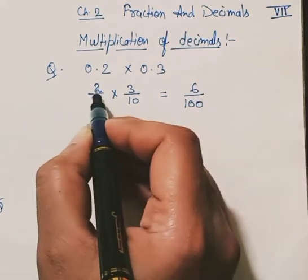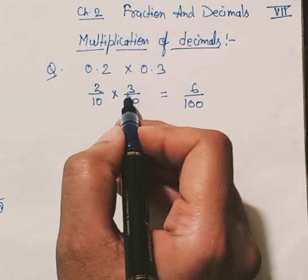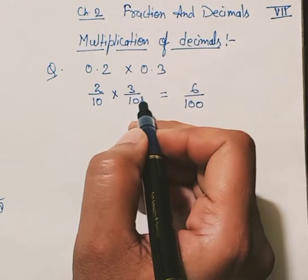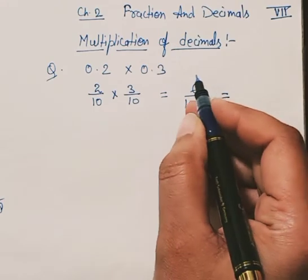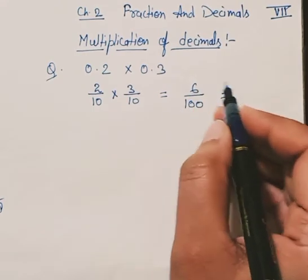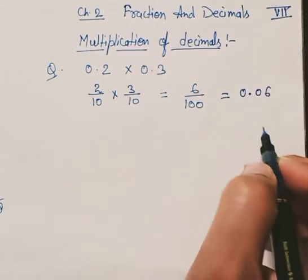You simply convert them into fractional values and multiply denominator by denominator and numerator by numerator. Now we have the answer 6 upon 100. You can easily convert this number into decimal, so the answer is 0.06.